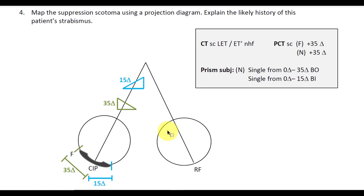In this scenario, we have a patient with a left esotropia. We've been given the PCT result at far and near, which is the same at 35 diopters, and the prism subjective at near.